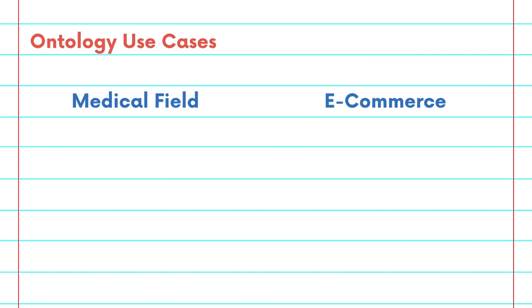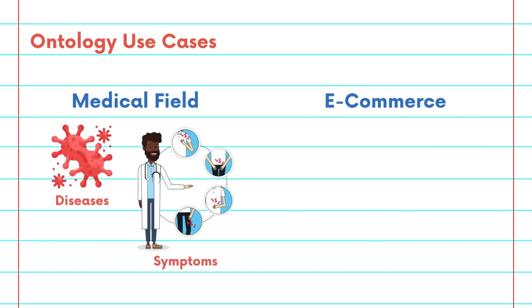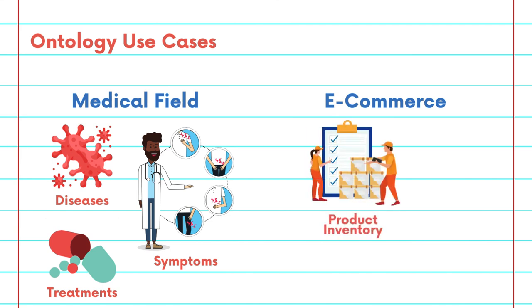In the medical field, for example, ontologies classify diseases, symptoms, and treatments, facilitating research and patient care. In the world of e-commerce, ontologies help organize vast product inventories, enhancing user experience and business intelligence.